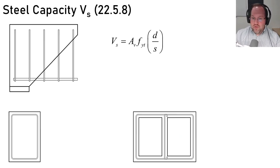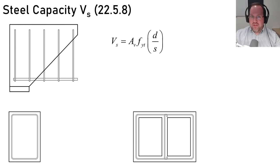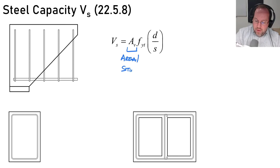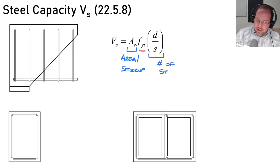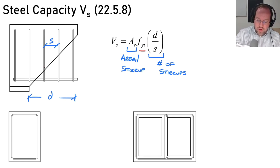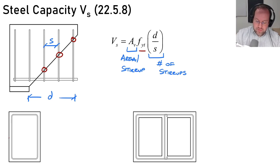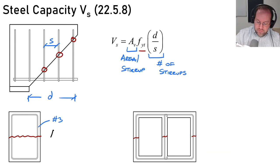The steel contribution to shear capacity has not changed in the newest version of the code. The expression is A_V times f_yt times d/s, where A_V is the area per stirrup, f_yt is the yield stress of the stirrup, and d/s is the number of stirrups crossing my shear crack — with stirrup spacing s over the region of depth d. For example, if this is a number-3 stirrup, then A_V is the area of a number-3 bar (0.11 in²) times two legs crossing the shear crack, giving 0.22 in².